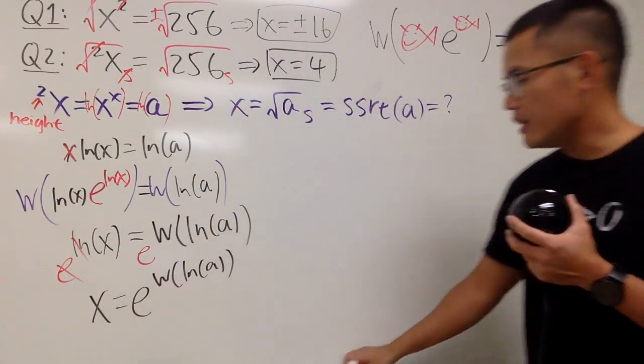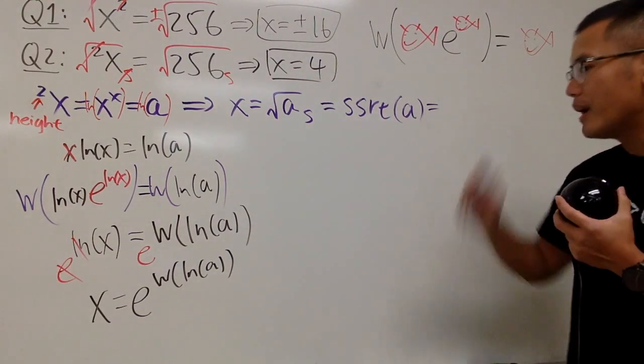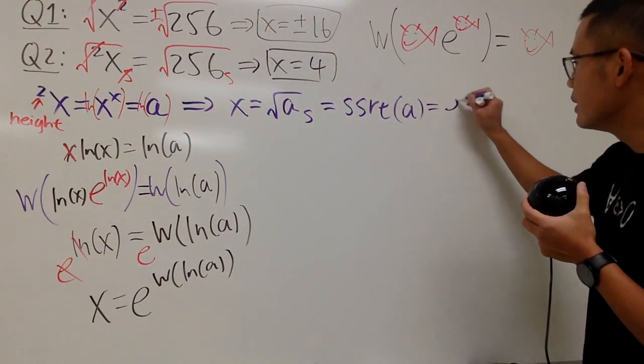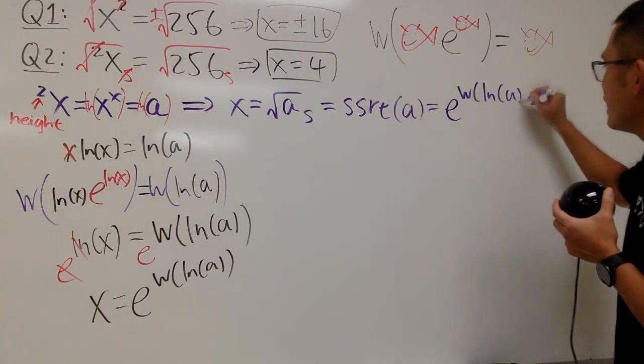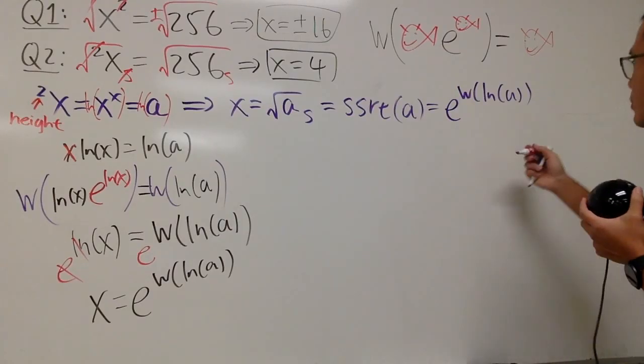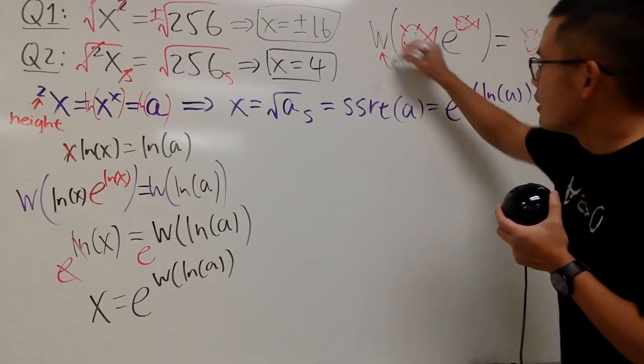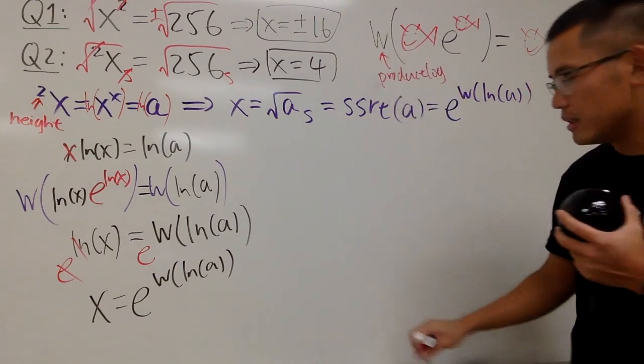So if you want to figure out the ssrt, namely the super square root of a number a, you can just go ahead and do e to the W of ln of a, like this. And again, as a reminder, the W right here, this is called the product log. So that's it. Really cool stuff, but I don't want to end it here.